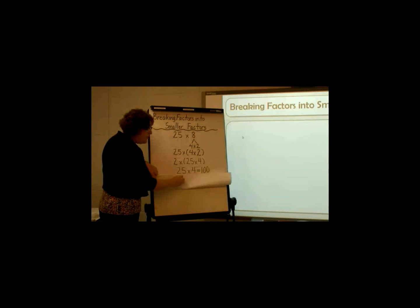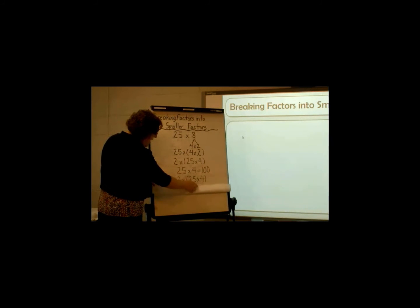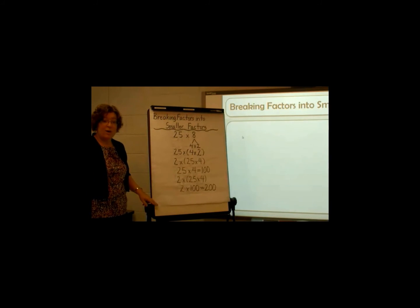So I've used some numbers that are easier for me to work with to solve that problem. Now let's go back to the original problem. If I have two groups of 25 times 4 and I know that 25 times 4 equals 100, then I have two groups of 100, which equals 200.